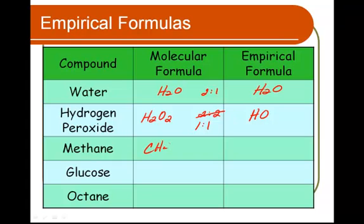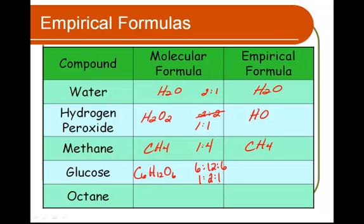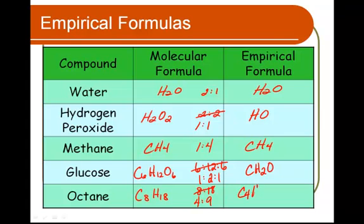But if we look at hydrogen peroxide, H₂O₂, here we have that ratio of two to two. This ratio can be reduced to one to one. So the empirical formula of hydrogen peroxide is HO. Methane is CH₄. Here we have a ratio of one to four — that can't be reduced down any lower, so our empirical formula for methane is still CH₄. Glucose is C₆H₁₂O₆. Here we have a six to twelve to six ratio. If we divide all of those numbers by six, we can get a one to two to one ratio. So glucose's empirical formula is CH₂O. Octane is C₈H₁₈. Here we have a ratio of eight to eighteen. If we divide by two, we get a four to nine ratio, so the empirical formula would be C₄H₉.